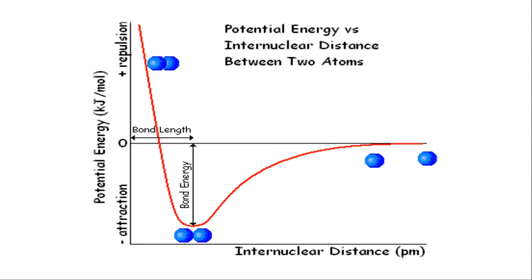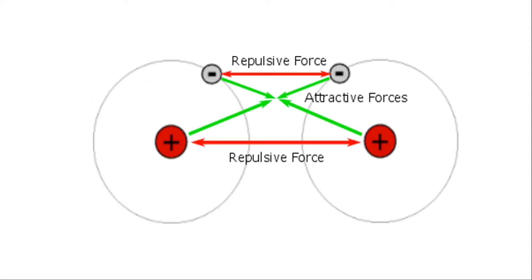First, let us learn what is internuclear distance and what happens when two atoms come close to each other. Internuclear distance, as the name suggests, is the distance between the two nuclei — the nucleus of one atom and the nucleus of another atom.